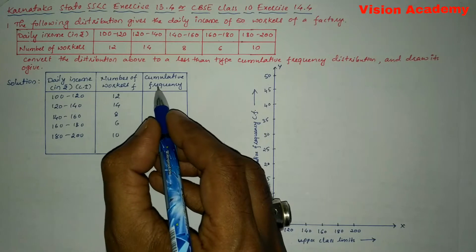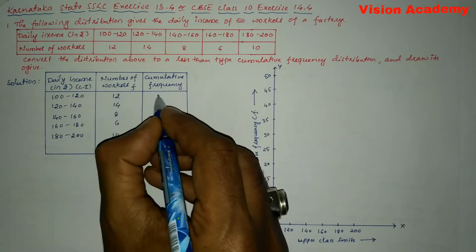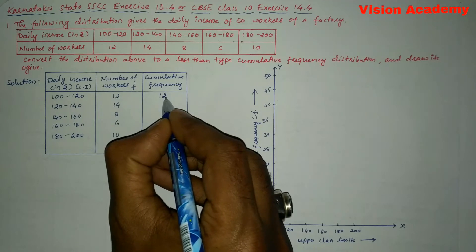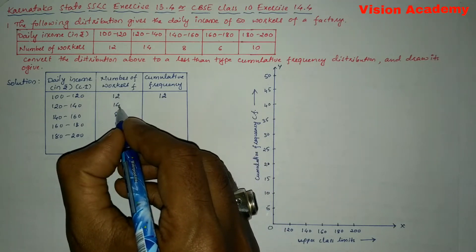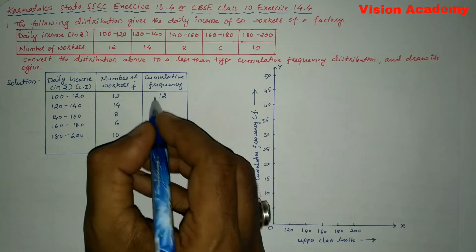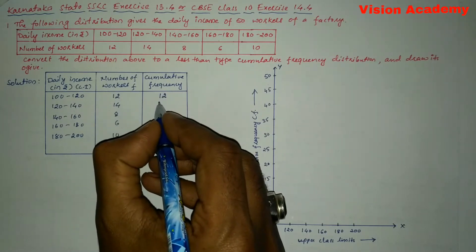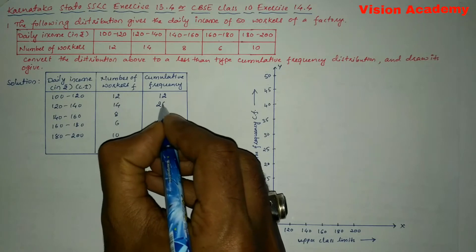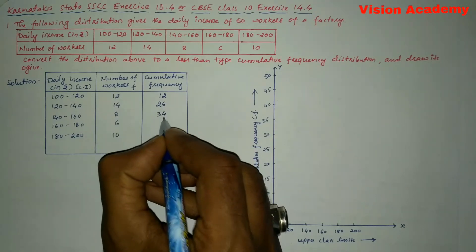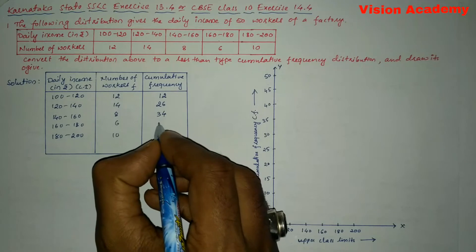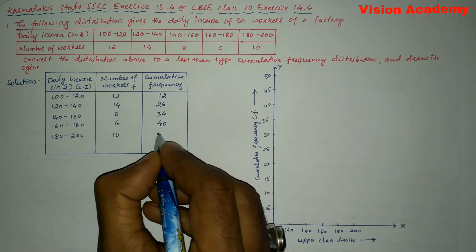Next, let us find the cumulative frequency. The first frequency is written as it is, that is 12. Then we add each successive frequency: 12 plus 14 gives us 26, 26 plus 8 gives us 34, 34 plus 6 gives us 40, and 40 plus 10 gives us 50.